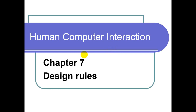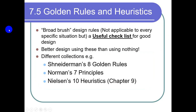In the last class we were studying about design rules and talked about principles, rules, guidelines and standards. Now we are going to study different golden rules and heuristics. Today we will study Schneiderman's 8 golden rules, Norman's 7 principles, and Nielsen's 10 heuristics. Let's start with Schneiderman's 8 golden rules.